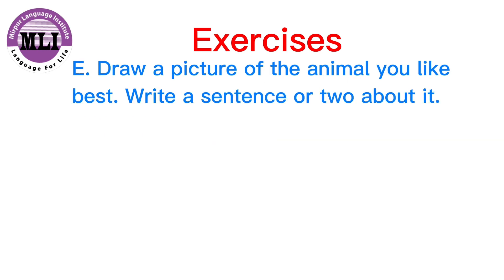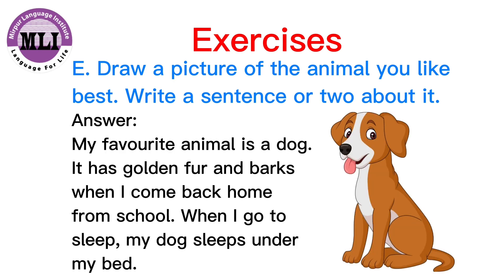In question number E, you have to draw a picture of the animal you like best and write a sentence or two about it. My favorite animal is a dog. It has golden fur and barks when I come back from school. When I go to sleep, my dog sleeps under my bed. Here is my dog's picture.